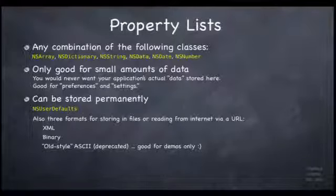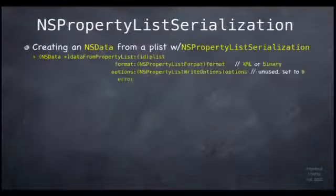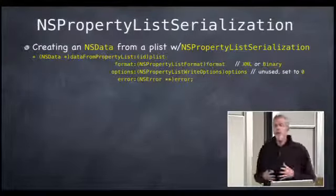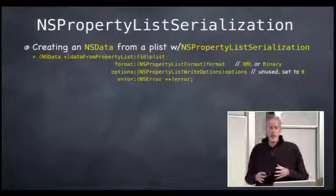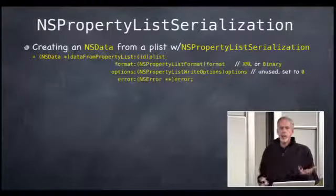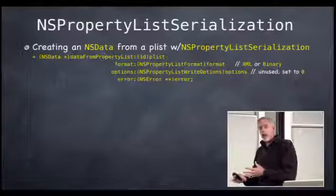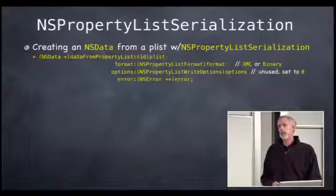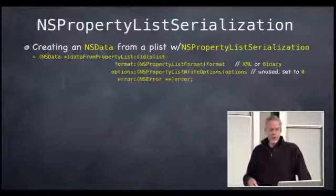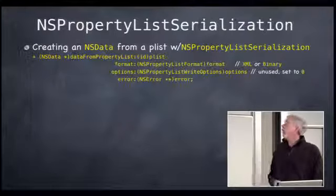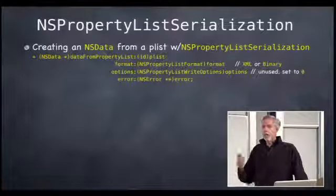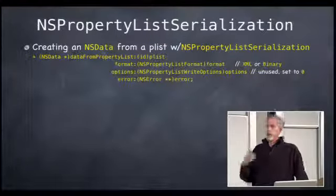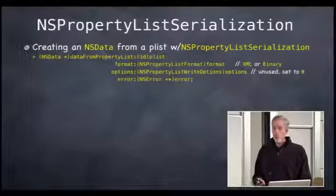The old-style format is mostly for demos. XML is the new style and what most people use. The binary style might be used for large property lists that have big NSDatas in them. To serialize a property list you use NSPropertyListSerialization — it only has class methods. The two main class methods: one takes a property list and throws it into an NSData, and the other takes NSData and sucks a property list out of it.